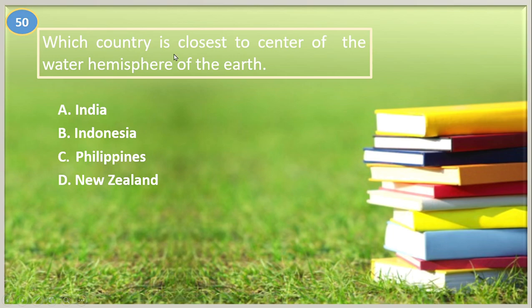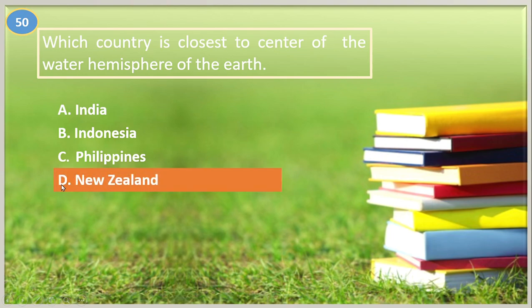Number fifty. Which country is closest to the center of the water hemisphere of the earth? A. India, B. Indonesia, C. Philippines, D. New Zealand. The answer is letter D, New Zealand. The water hemisphere — the hemisphere of the earth with the highest area of water — is near New Zealand.